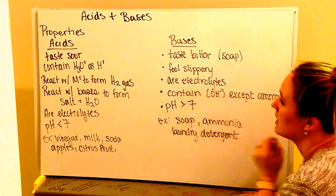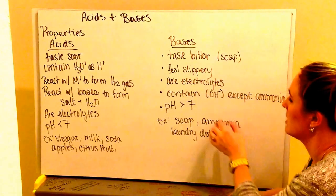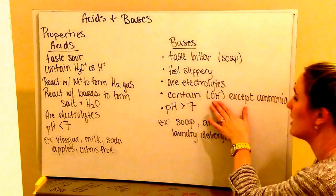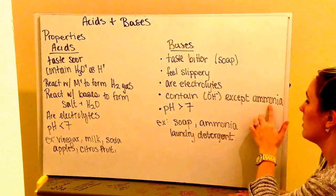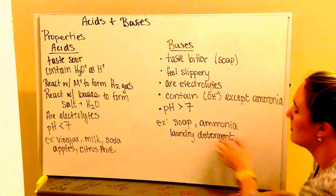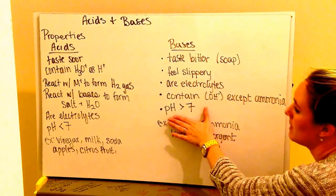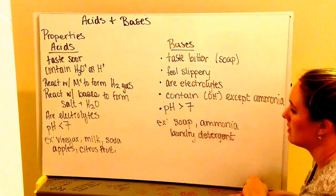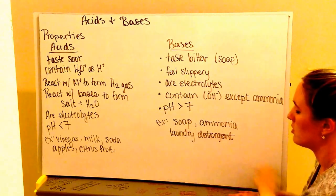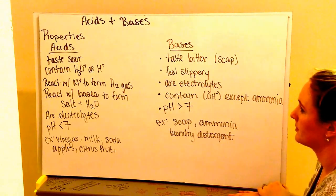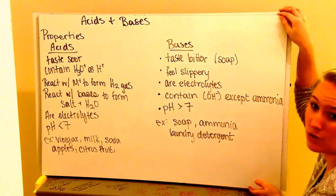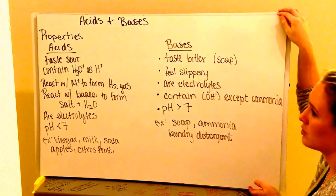They are also electrolytes. They conduct electricity. They contain OH- which is your hydroxide ion, except for ammonia. Ammonia is NH3, which is also a base. And then bases are going to have a pH greater than 7. Some examples are ammonia, soap, and laundry detergent. You can find more information about properties in your textbook as well in the introductory worksheet.